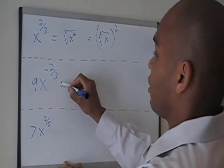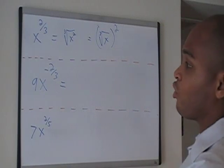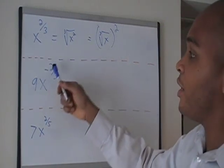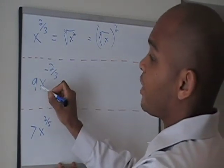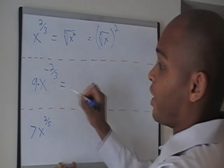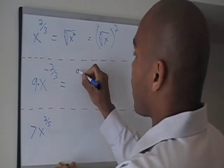For the next expression, the 9, this is a little tricky. A lot of people tend to raise the 9 to the negative 2/3. But this 9 is separate. It's really saying 9 times x to the negative 2/3. So the 9 we're going to put out here by itself.